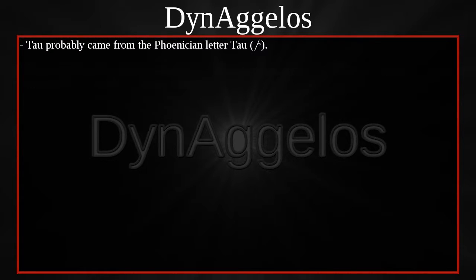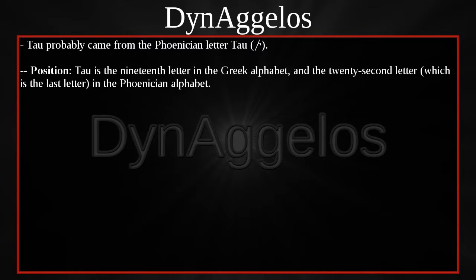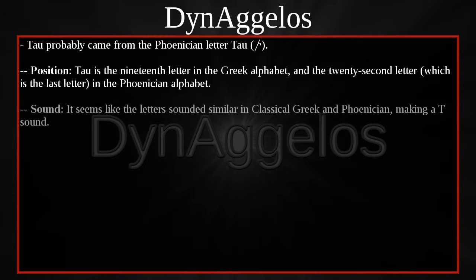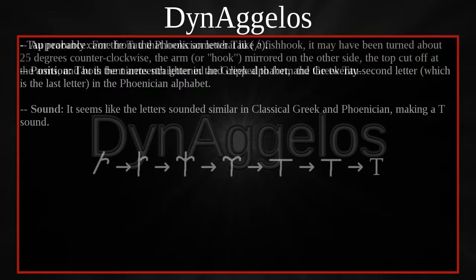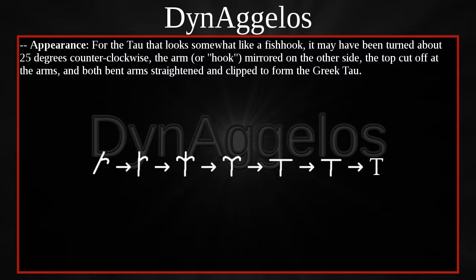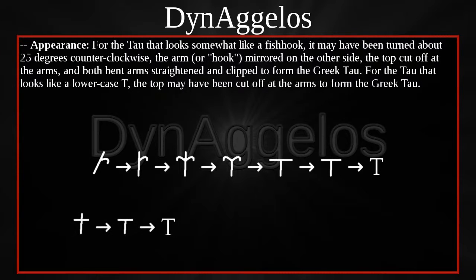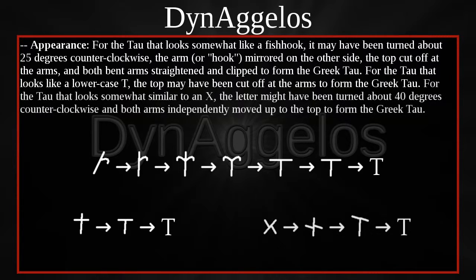TAU probably came from the Phoenician letter TAU. TAU is the 19th letter in the Greek alphabet, and the 22nd — the last letter in the Phoenician alphabet. It seems like the letters sounded similar, making a T sound. For the TAU that looked somewhat like a fish hook, it might have been turned about 25 degrees counterclockwise, the arm mirrored on the other side, the top cut off at the arms, and both bent arms straightened and clipped to form the Greek TAU. For the TAU that looks somewhat similar to an X, the letter might have been turned about 40 degrees counterclockwise and both arms independently moved up to the top to form the Greek TAU.